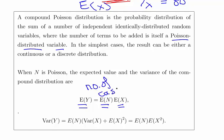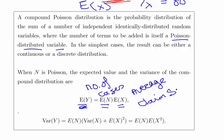In this case, that's the expected number of claims in six months multiplied by the average claim size. So if we're expecting six claims and each is on average $80, that gives us 6 × 80 = $480 total. That's the expected total claim amount.